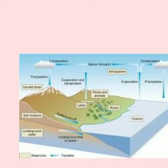We get water from a tap in our home. Children, we know very well that the earth is called a blue planet because three-fourths of its surface is covered with water. Most of this water exists in the ocean.